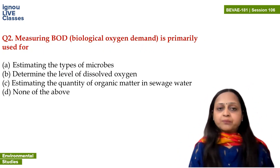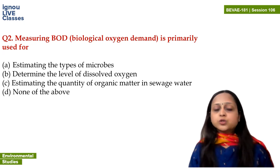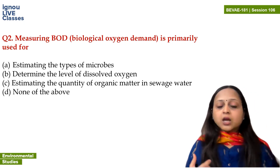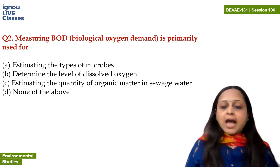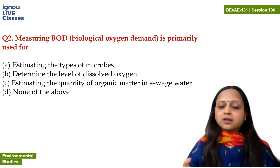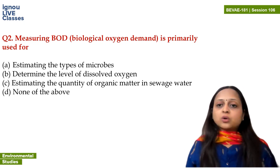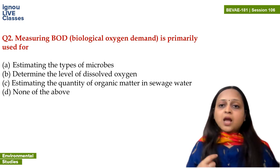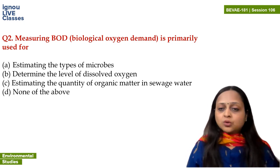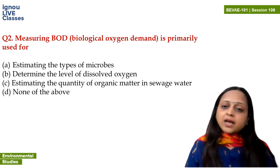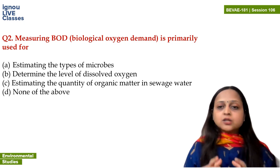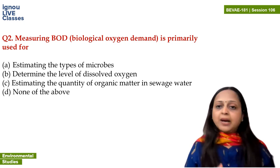Moving on to the next question: measuring BOD. BOD is Biological Oxygen Demand. The definition of BOD is: the amount of oxygen required by microorganisms to degrade organic pollutants in water. If there is organic pollutant in water, microorganisms decompose and degrade it, and the amount of oxygen they need for this process is called BOD. The more organic pollution there is, the more the oxygen demand, because more microorganisms are required to degrade the pollution. So, a high BOD indicates that the water is polluted.